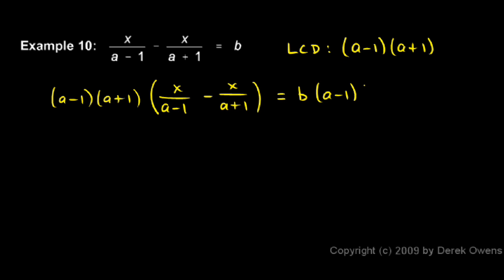Now on the left, we distribute and multiply all of this by that. You can think of this (a minus 1)(a plus 1) as being over 1.